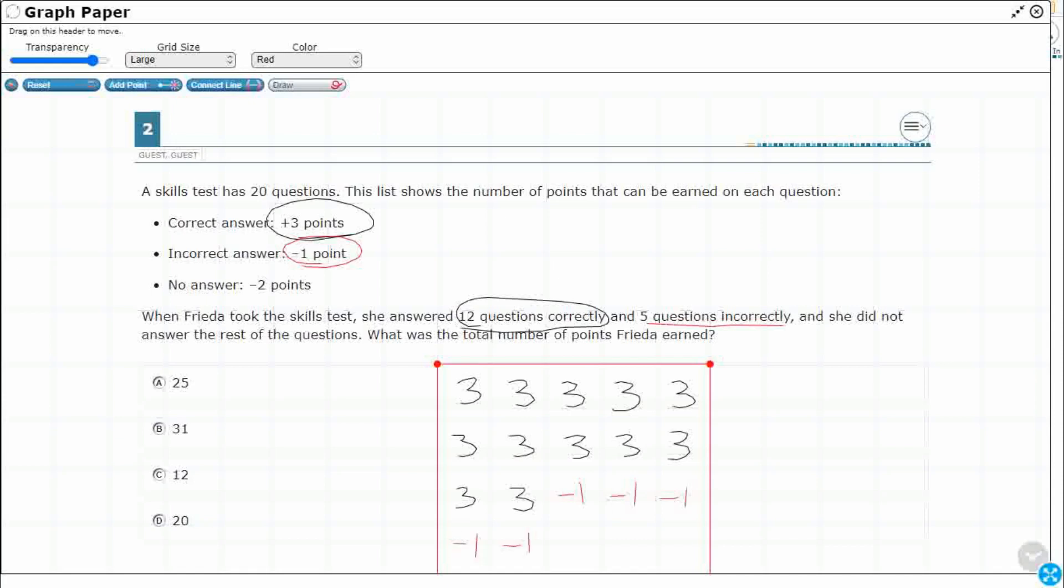And then it said she did not answer the rest. So let me just make that blue. The rest of the questions. And we know that the rest actually gets you a negative 2. So you see our little 4x5 grid over here. We actually have 3 that are negative 2, negative 2, negative 2. Alright, so there's a visual representation of how many points she actually has.